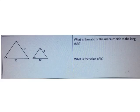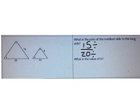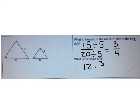Let's try one last problem. What's the ratio of the medium side to the long side? The medium side I know is 15 and the long side is 20. The greatest common factor of 15 and 20 is 5. When I write that fraction in simplest form, I get 3 fourths. To find the value of b, I can multiply 12 times 3 fourths. The value of b is 36 over 4, or 9.